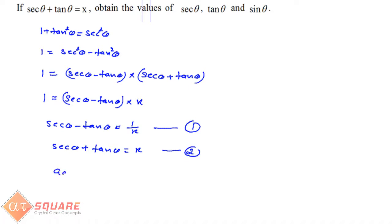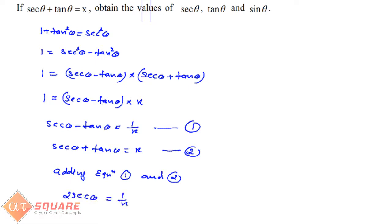Adding equations 1 and 2 — when you add the equations, no sign changes. The -tan θ and +tan θ cancel out, giving 2 sec θ = 1/x + x.